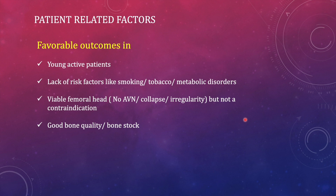Patient-related factors for good outcomes include: young healthy patients with good bone stock and absence of risk factors like smoking, tobacco chewing, and metabolic disorders that compromise vascularity and healing potential. A viable femoral head is needed, but AVN is not a contraindication for valgus osteotomy. If the patient has AVN but no pain symptoms, you can proceed. If only the lateral part of the head is affected, valgus osteotomy realigns the femoral head so the affected part is no longer in the weight-bearing axis, actually helping to relieve pain.